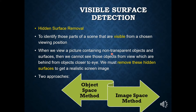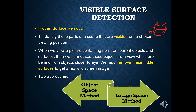When we view a picture containing a non-transparent object and surface, we cannot see those objects which are behind other objects. We must remove these hidden surfaces to get a realistic screen image. For example, if we have one object and the viewing position is from one side, we only see the front part. The parts at the back cannot be seen and will be removed, detecting only the visible front part.